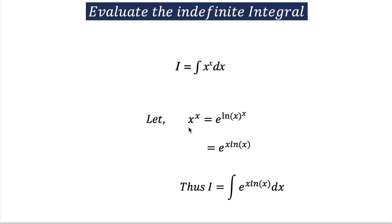Let's make a substitution. x to the power x is equal to e to the power ln x, raised to the power x. According to the properties of logarithms, we can bring the x in front of the ln, giving us e to the power x ln x. So instead of x^x dx, we substitute with e^(x ln x) dx.